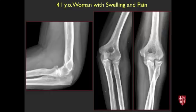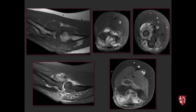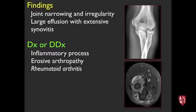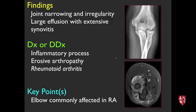Next case, 41-year-old with swelling and pain in the elbow. Radiographs show irregularities; MRI shows radiocapitellar joint fluid and extensive synovitis — an inflammatory or erosive arthropathy. This is rheumatoid arthritis, which is fairly common in the elbow. Extensive RA with synovitis.